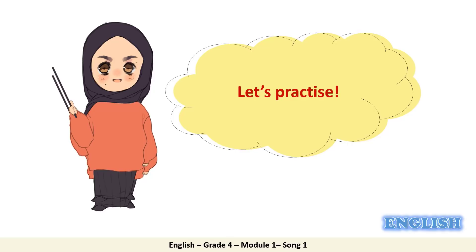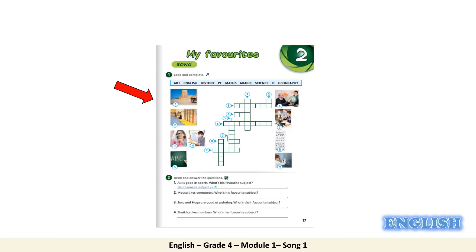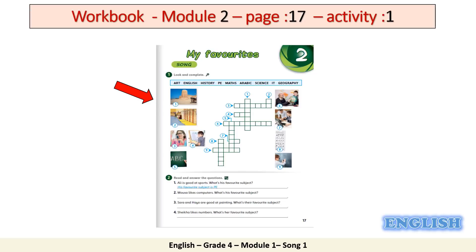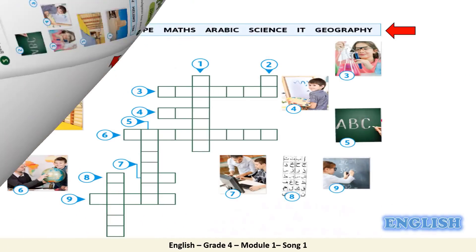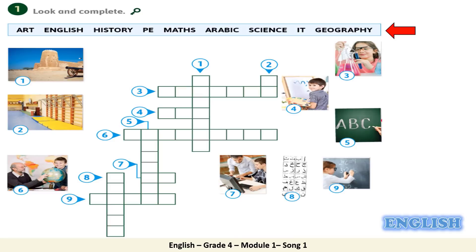Let's practice more. Are you ready? Open your workbook at Module 2, page 17, and pay attention at activity number 1. In this activity, we are going to look at the pictures and complete the crossword. You are going to use the words from the blue box. Let's read the words together: art, English, history, PE, maths, Arabic, science, IT, and geography.